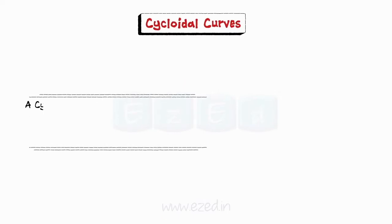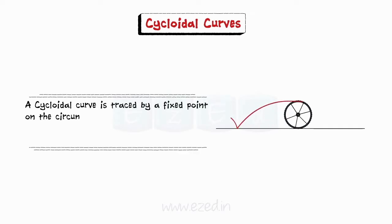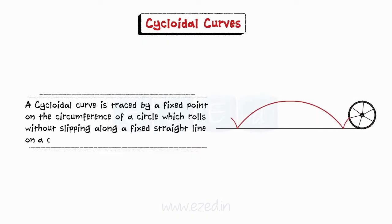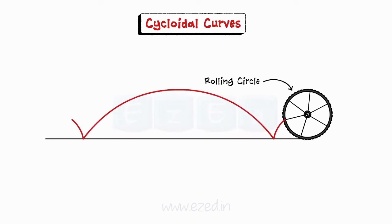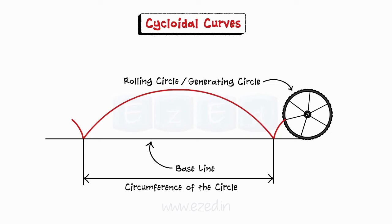A cycloidal curve is traced by a fixed point on the circumference of a circle, which rolls without slipping along a fixed straight line or a circle. The circle which rolls along the line is called the rolling circle, also known as the generating circle. The fixed line or circle is called the base line or base circle. When a circle makes one revolution on the base line, it would have moved through a distance equal to the circumference of the rolling circle.